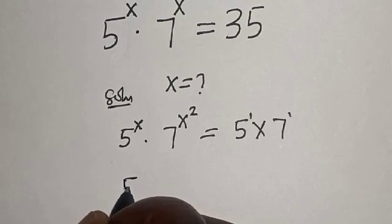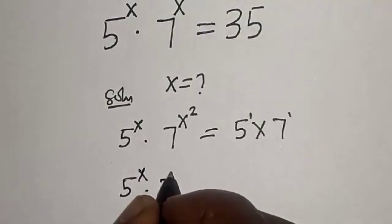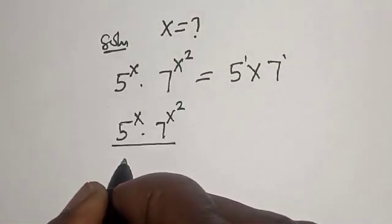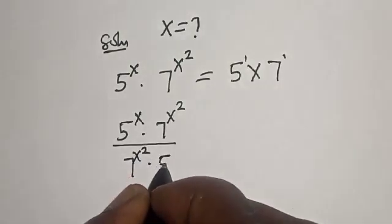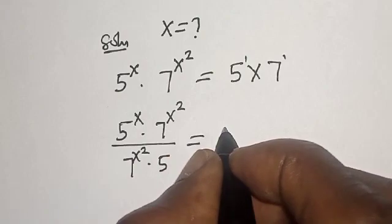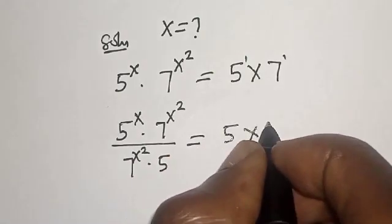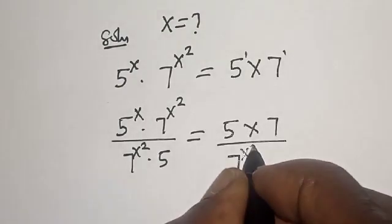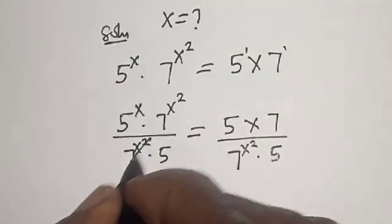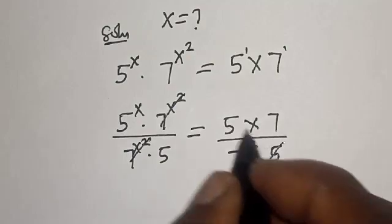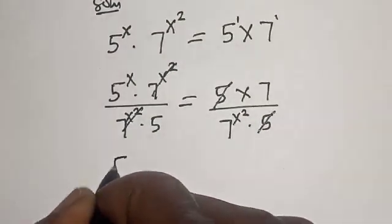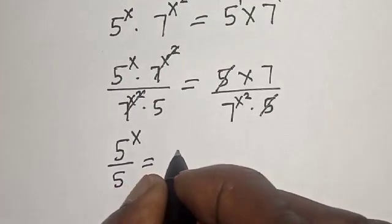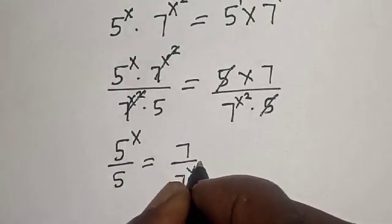Now let's divide both sides. We have 5 raised to the power of x multiplied by 7 raised to the power of x squared, divided by 7 raised to the power of x squared multiplied by 5, is equal to 5 multiplied by 7 over 7 raised to the power of x squared multiplied by 5. This one will cancel this, and this one will cancel this. We have 5 raised to the power of x divided by 5 is equal to 7 divided by 7 raised to the power of x squared.